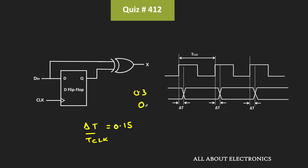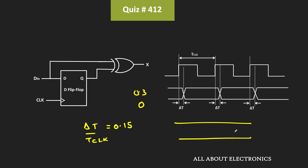If the probability is 0, the output will remain either completely 0 or 1. For the in-between case of 0.5, it means we will see a transition in the data signal after every two clock periods. For simplicity, let us first consider that the probability of transition is equal to 100%, meaning after each clock duration the data signal will see a transition. Considering that, let us find the output signal across this XOR gate.